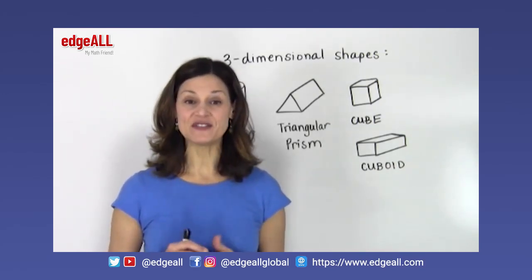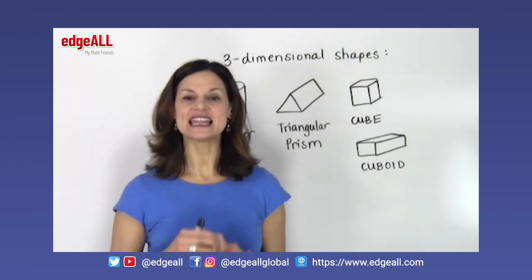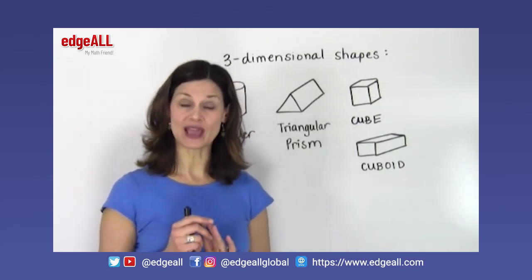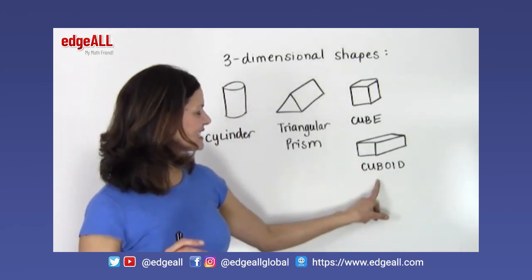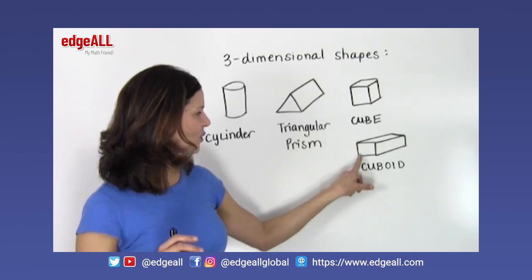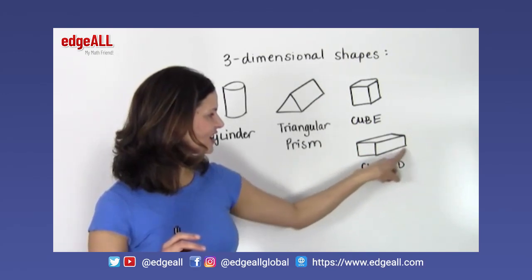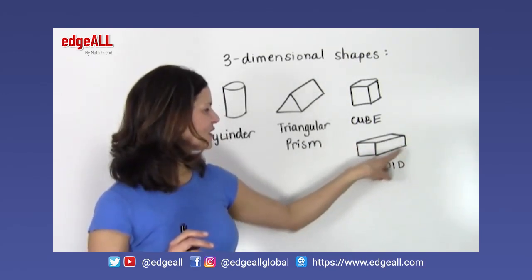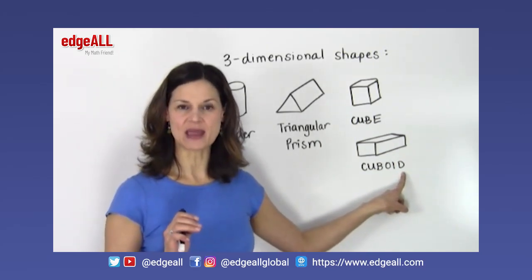Remember that the difference between a cube and a cuboid is that the sides of a cuboid are not all the same length. You can see in this cuboid, we have a square here at this end of the shape where these two sides are the same, but then this side here is longer than these two. So in a cuboid, all the sides are not the same shape.